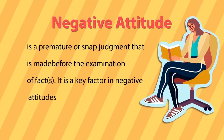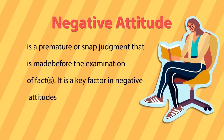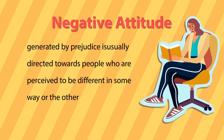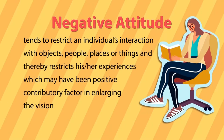Many times a negative attitude is a premature or snap judgment made even before examination of the facts. This premature snap judgment is a very key factor in negative attitude. One very important contributor to negative attitude is prejudice. If you have any prejudice towards anything — any event, object, place, idea or person — it basically directs people to perceive in a different way. Negative attitude tends to restrict an individual's interaction with objects, people, place or things, and also restricts their experiences which may have positively contributed to enlarging their vision.